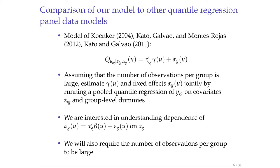The estimator was also suggested in Koenker. Kato, Galvao, and Montes-Rojas developed its statistical properties. The estimator assumes that if you have enough observations in each group, you can run a quantile regression on the pooled dataset—Y on covariates and dummy variables for each group—and estimate gamma consistently. Our aim in this paper is different: we want to understand how the fixed effect alpha_g depends on group-level covariates x_g, putting additional structure and assuming additive separability.